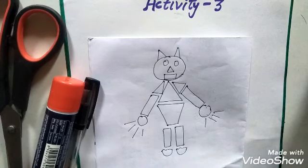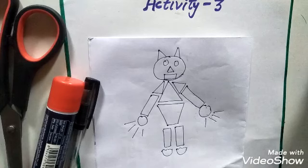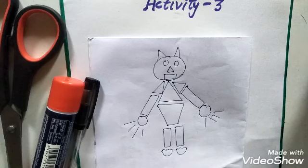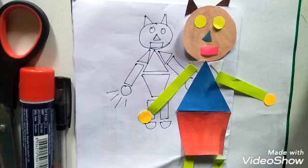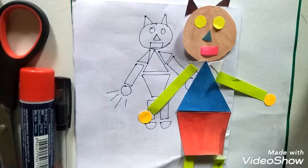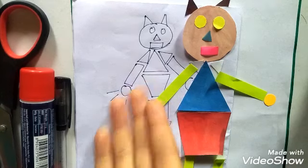Now we will cut whatever geometric shapes we need from the colored paper. Something like this - this sketch made up of different 2D shapes. Now arrange all the shapes like this rough sketch.